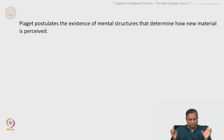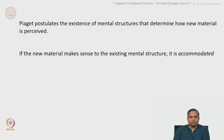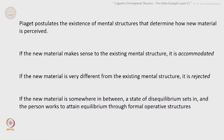Piaget postulates the existence of mental structures — frameworks that determine how material is perceived. If the new material that a person is exposed to makes sense to the existing mental structure, it is accommodated — the person accepts and integrates it into his or her own mental structure. If the new material is very different from the existing mental structure, it is outright rejected. If the new material is somewhere in between, a state of disequilibrium sets in, and the person works to attain equilibrium through formal operative structures. This is one of the key postulates of Piaget.